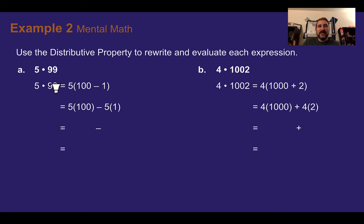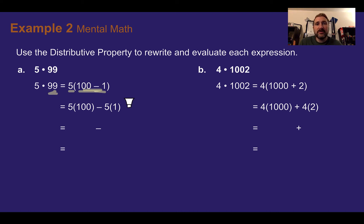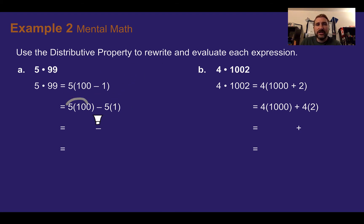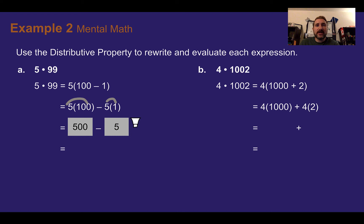We're given 5 times 99, but if we rewrite it as 5 times the quantity 100 minus 1 — since 99 and 100 minus 1 are the same — we can use the distributive property to multiply before we subtract. 5 times 100 is 500, minus 5 times 1 is 5. So 500 minus 5 is 495. This multiplication was made simpler by using the distributive property and creating an equal expression.